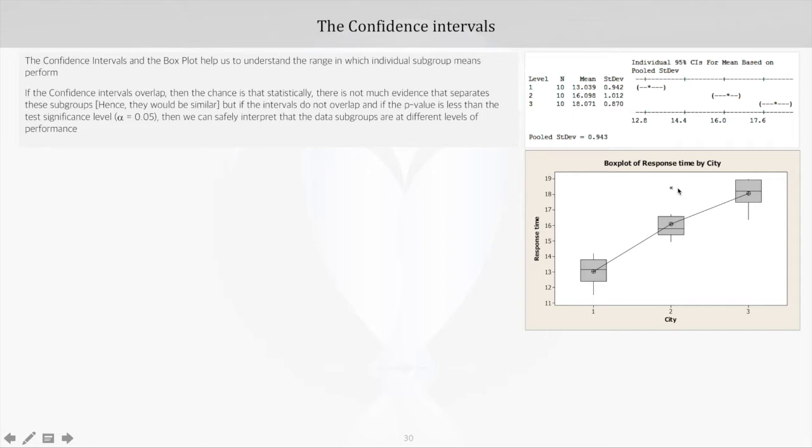If they overlap, then the chance is that statistically there is not much evidence that separates these subgroups, so in all probability they would be similar. But if the intervals do not overlap and if the p-value is less than the test significance level of, let's say, five percent, then in that case we can safely interpret that the data subgroup means represent different levels of performance.